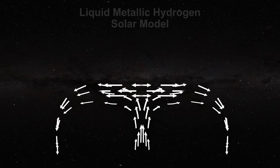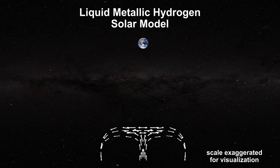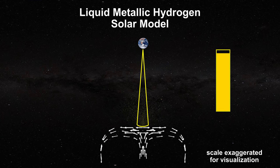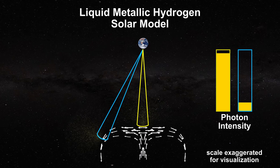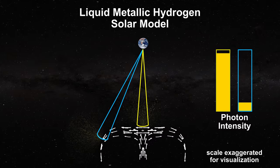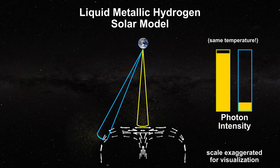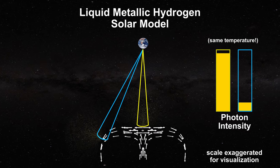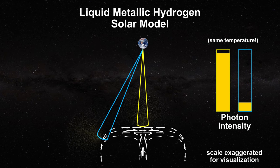Conversely, the metallic hydrogen model explains this phenomenon easily. The center of the granules is viewed at the normal to the surface while the intergranular lanes are viewed at an angle away from the normal. Both surfaces are at the same temperature but the directional spectral emissivities are vastly different. This is why the granular center appears bright while the intergranular lanes appear dark.